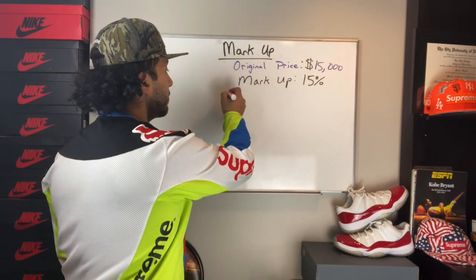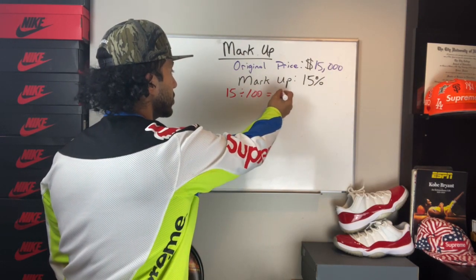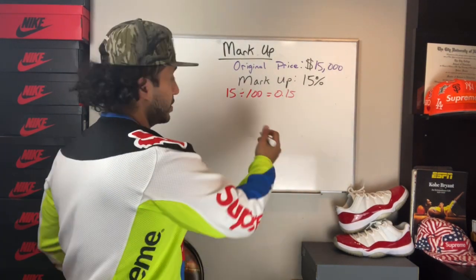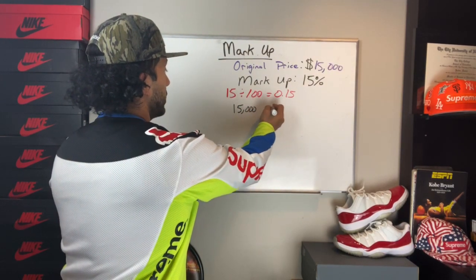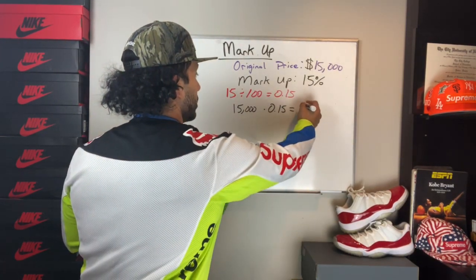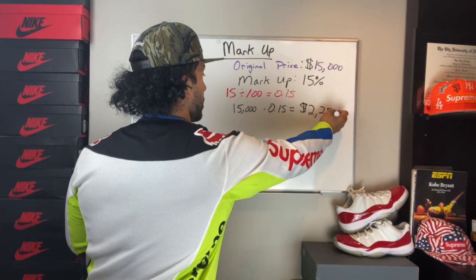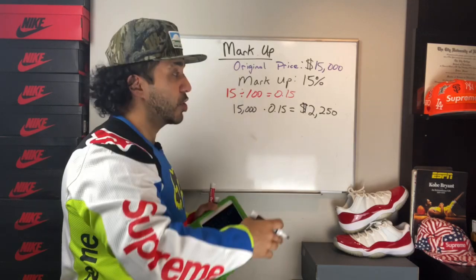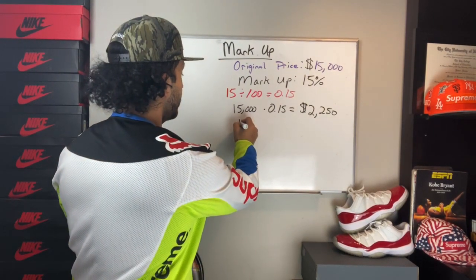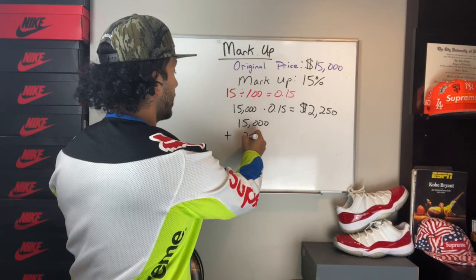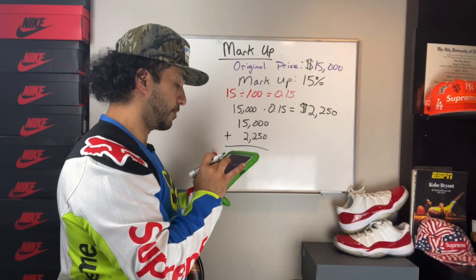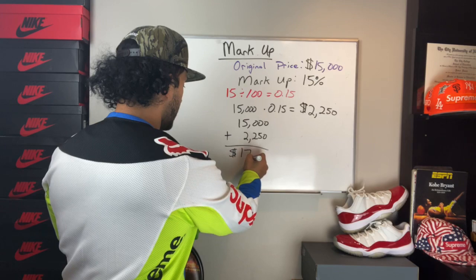First thing we're going to do is convert 15% to a decimal. We divide by 100 and get 0.15. Second step is to multiply the 15,000 — the original amount — by 0.15. Put that in my calculator. I get $2,250. That is the price being marked up, meaning you're paying an extra $2,250. The final price is determined by taking the 15,000 and adding the $2,250 to it — 2,250 plus 15,000 — and that gives us a final price of $17,250.